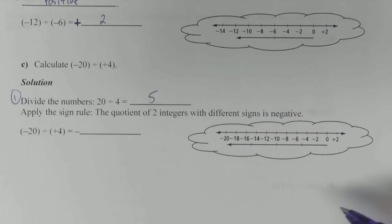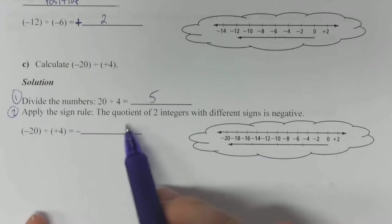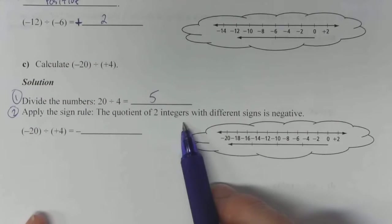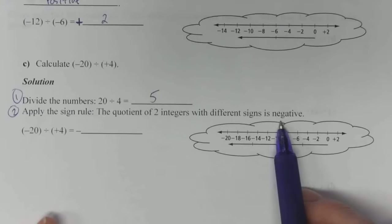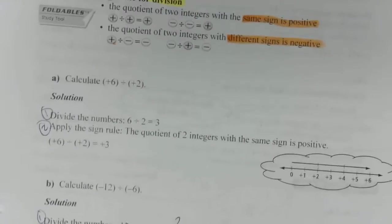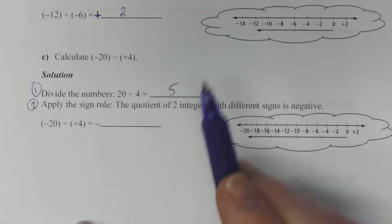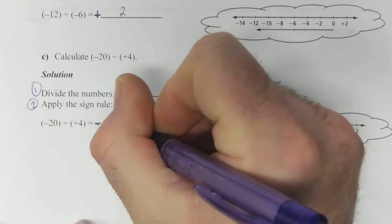Now we need to figure out what kind of 5 it is. Step 2, apply the sign rule. The quotient of two integers with different signs is negative. We've got a negative divided by positive. Go on up and check your rules. Negative divided by positive gives you a negative answer. It's a 5, but in this case, it's a negative 5.